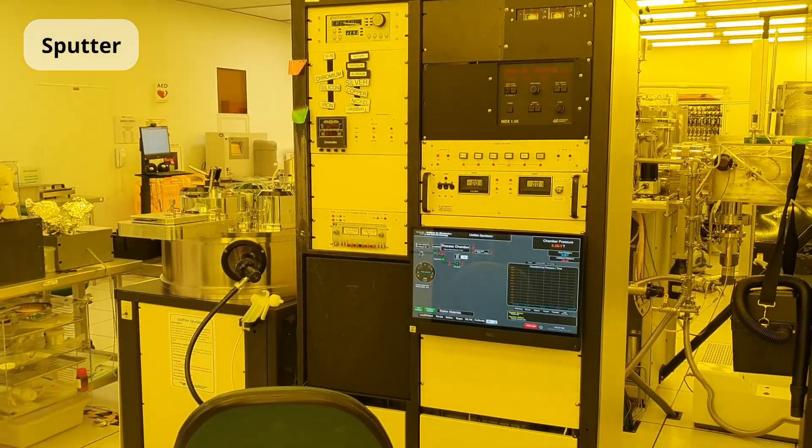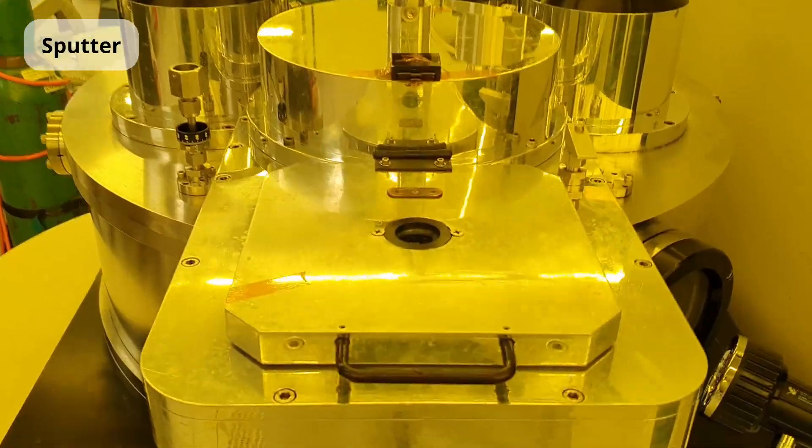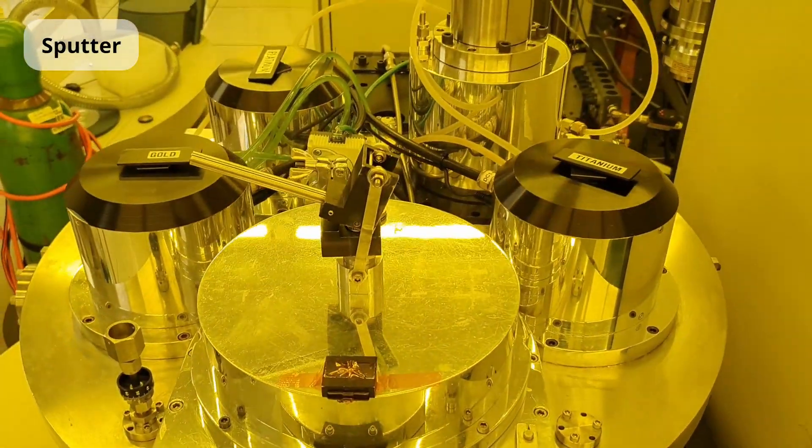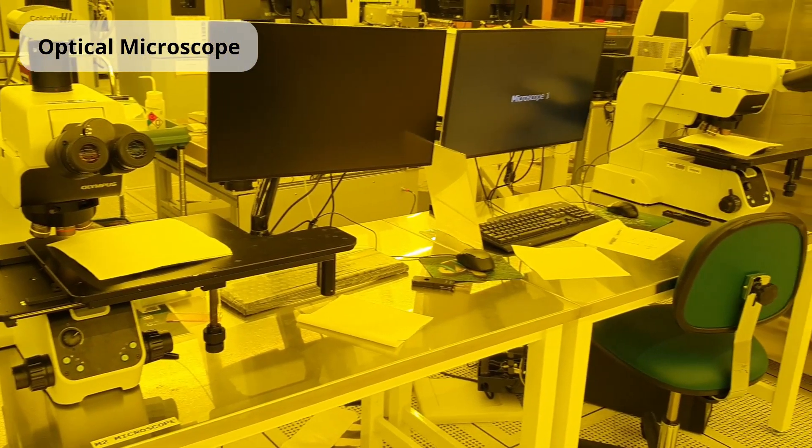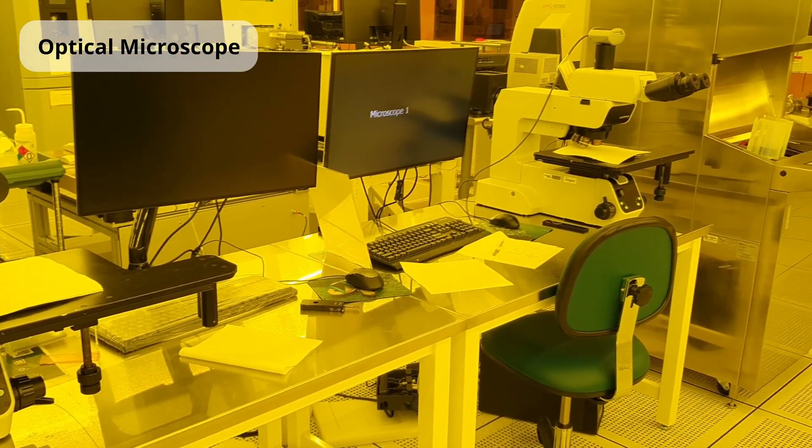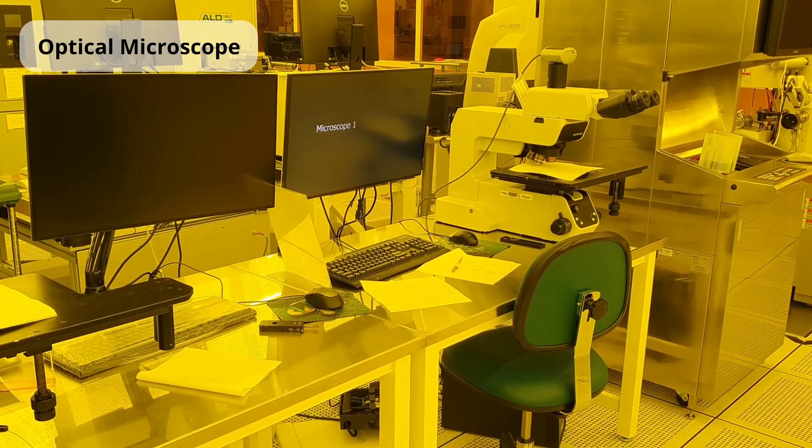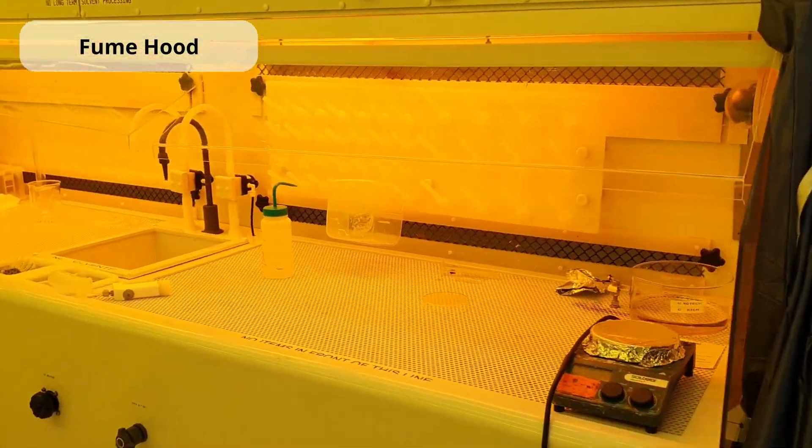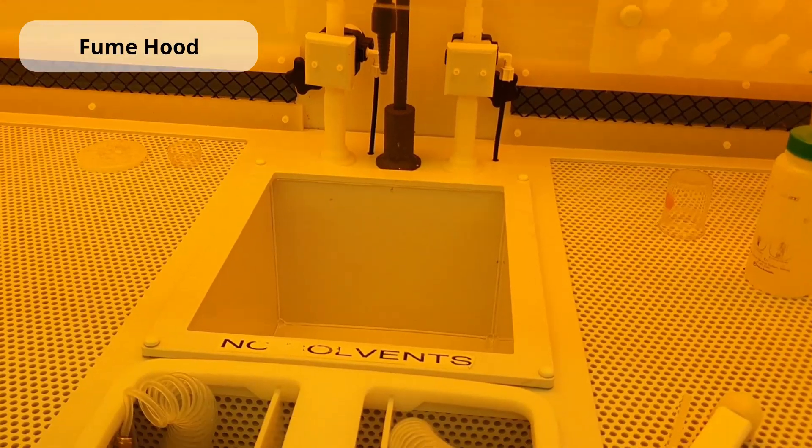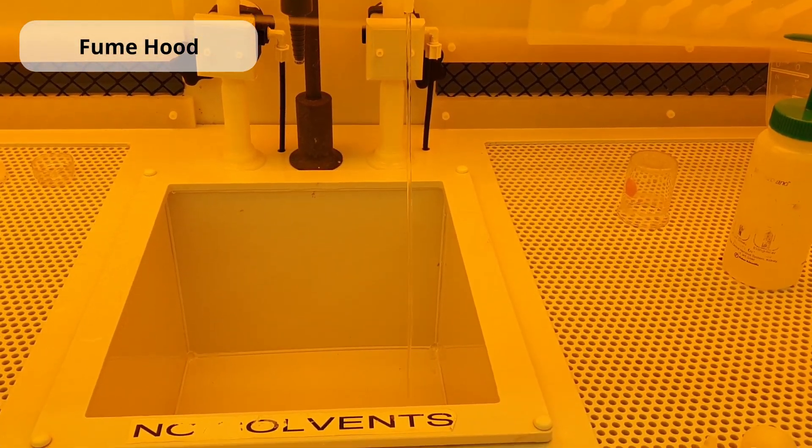This is a sputter equipment that we use to deposit various metals. These are optical microscopes, and we can see the pattern shape and size of our samples during the process. And there's a fume hood, and we are using chemicals here to do processes like wafer cleaning, development after exposure, or wet etch.